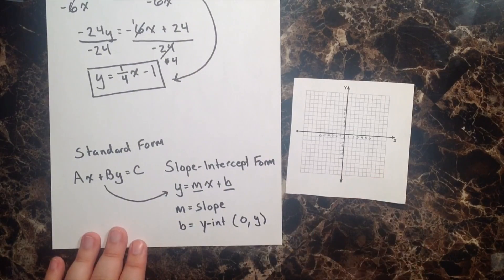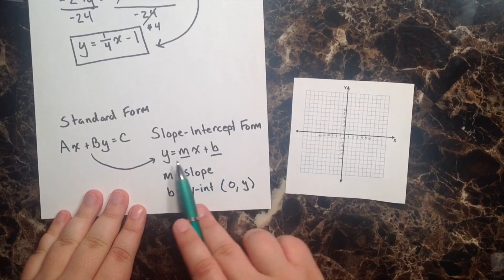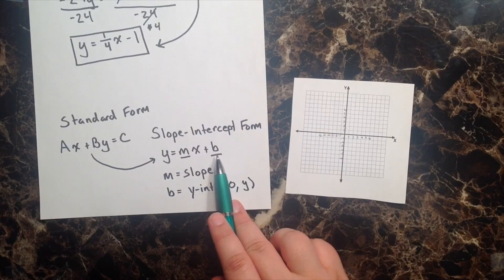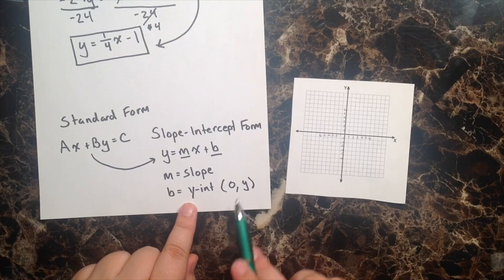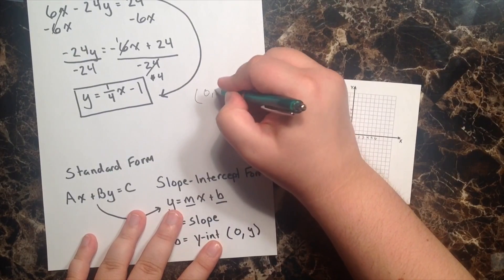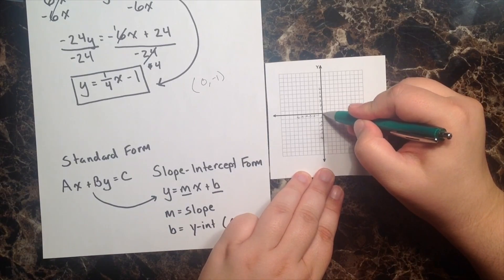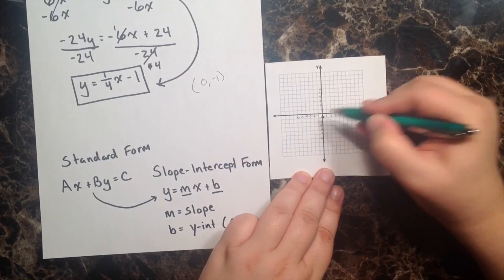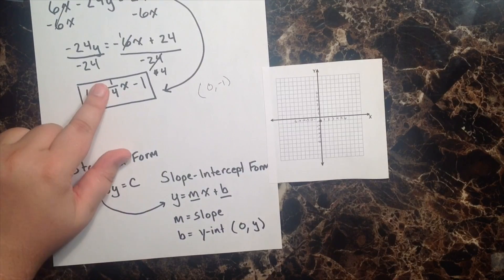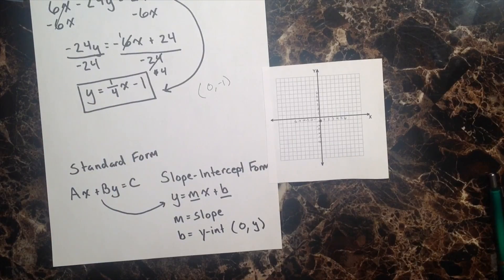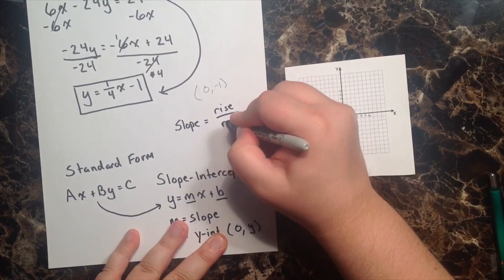Well, let's take a look at the information that we have. We have y equals 1 over 4x minus 1. And if I go back to my slope-intercept form, I know that b, which in this case is negative 1, is my y-intercept. So really what I have here for a y-intercept is 0, negative 1. So let's go ahead and plot that on our grid. 0, negative 1 is simply right there. And now I'm going to use my slope.